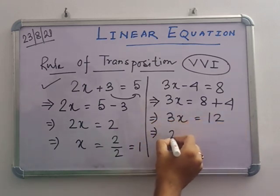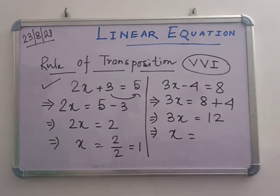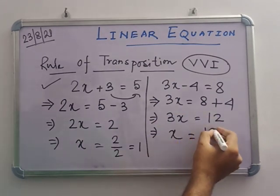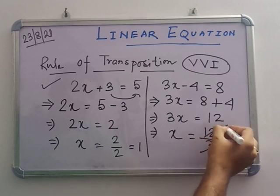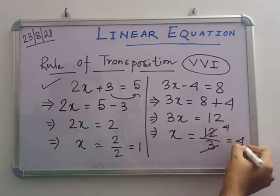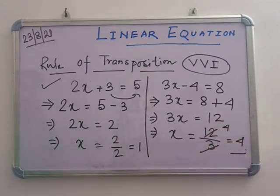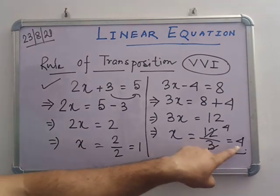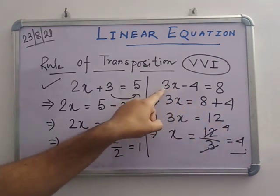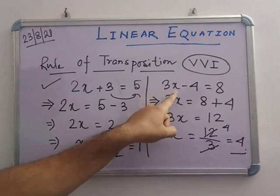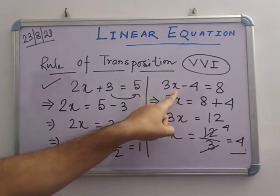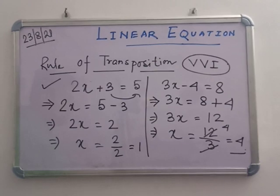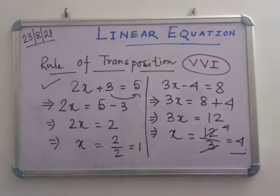From 3x equals to 12, x equals to 12 by 3, which is 4. So x equals to 4. To verify: 3 into 4 equals 12, then 12 minus 4 equals 8, which matches the right hand side. This is verified. Note it down, all of you.